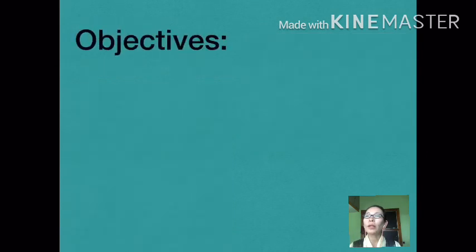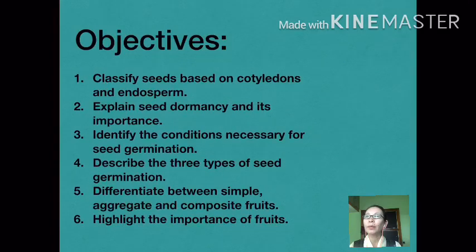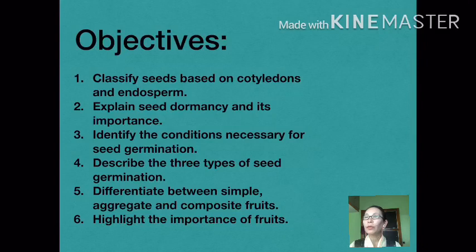1. Classify seeds based on cotyledons and endosperm. 2. Explain seed dormancy and its importance. 3. Identify the conditions necessary for seed germination. 4. Describe the three types of seed germination. 5. Differentiate between simple, aggregate, and composite fruits. And 6. Highlight the importance of fruits.